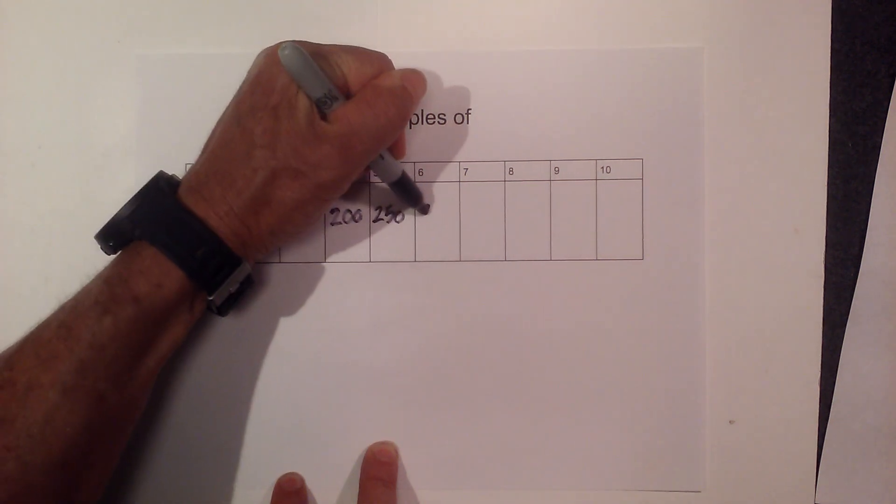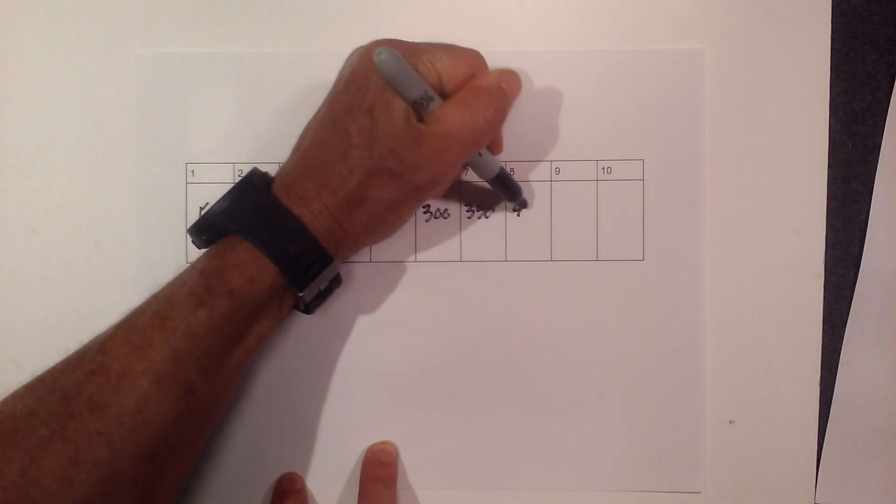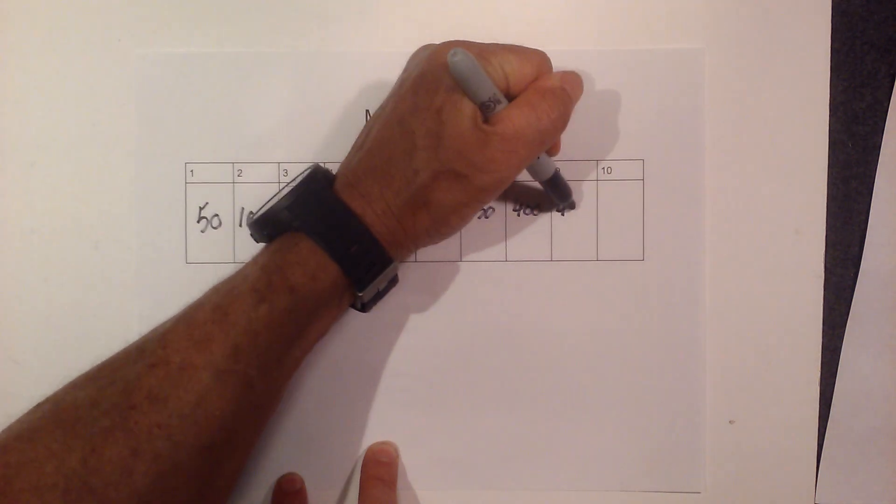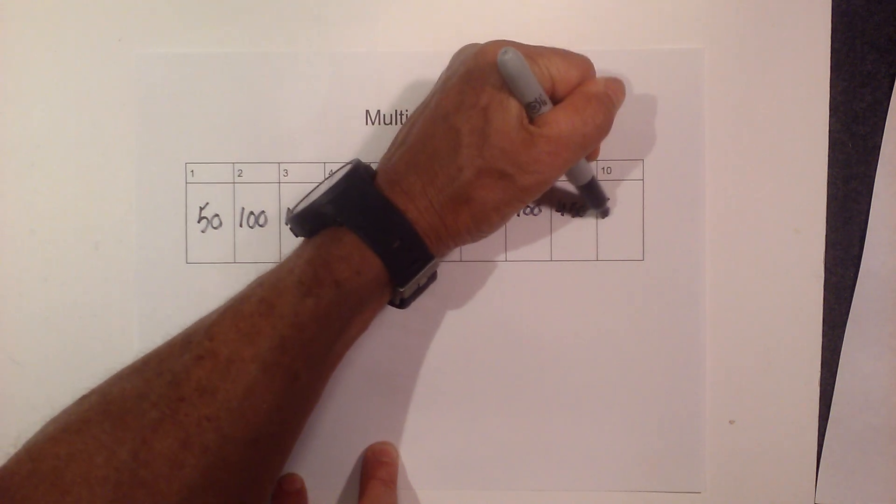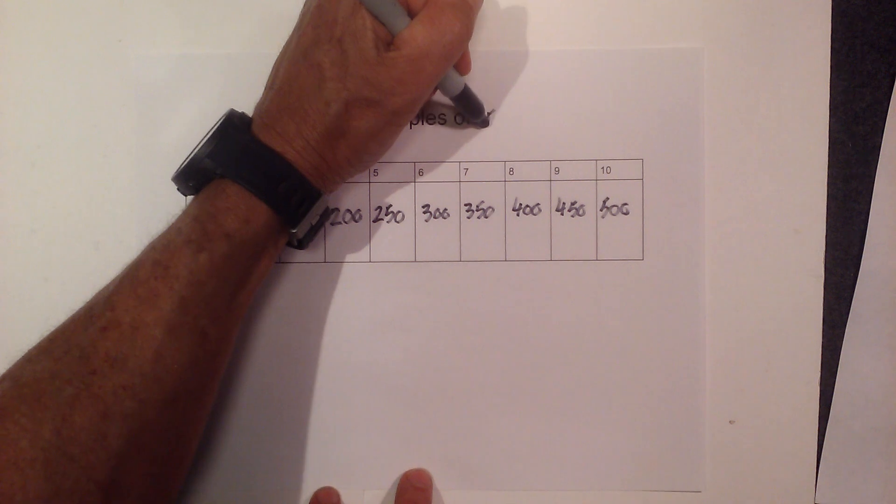250, 300, 350, 400, 450, and yes you guessed it, 500. So there are the multiples of 50.